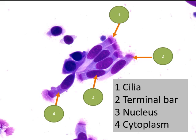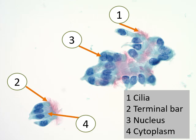Here is a DiffQuik stain — used by cytopathologists — showing the beauty of ciliated columnar cells. These are the normal cells lining the inside of your windpipe and breathing tubes. They have characteristic hair-like cilia at the top. Changing to a Papanicolaou stain — named after the same person as the Pap test — the colors change but the cells are the same. Again: cilia, terminal bar, nucleus, and cytoplasm are labeled.